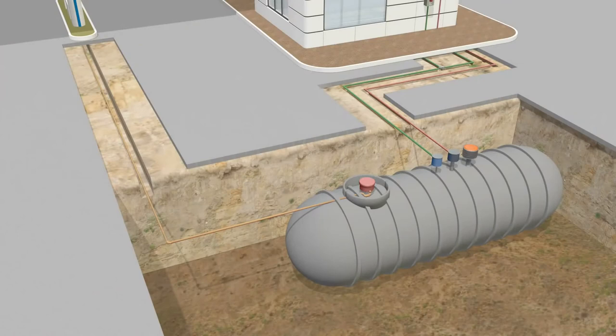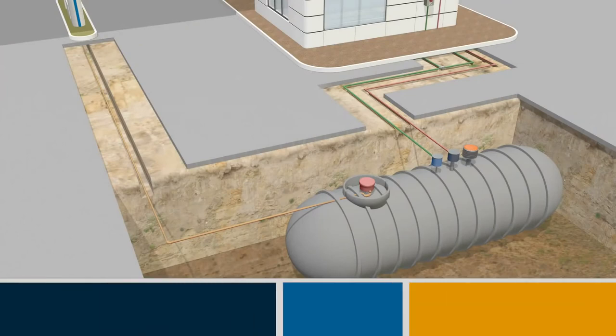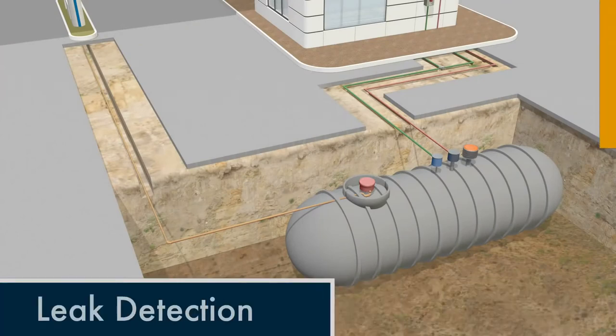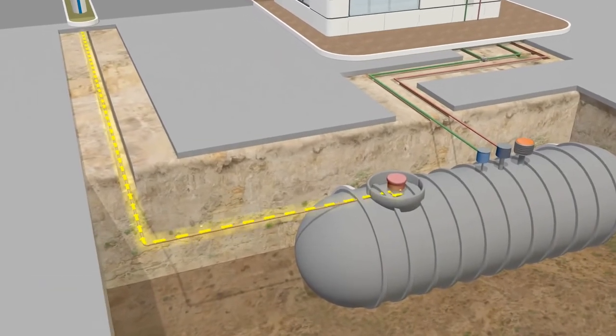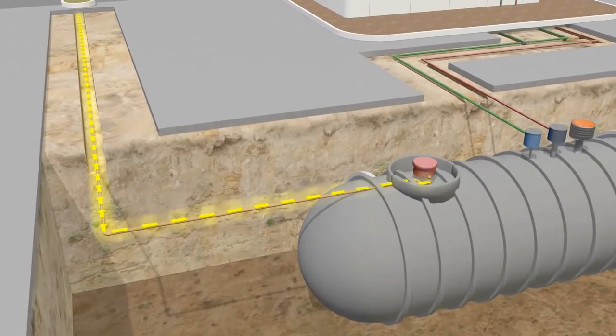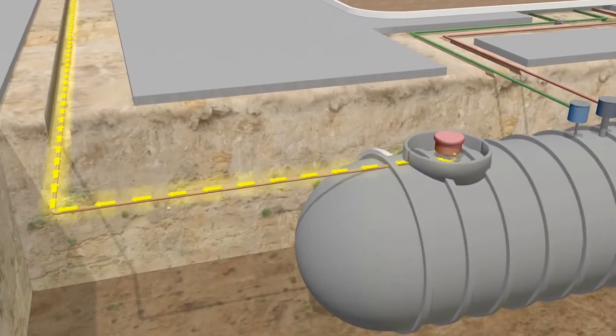But a commitment to safety also means expecting the unexpected. So leak detection is another important feature of underground storage tanks. Sensors can detect even a small leak by comparing the amount of fuel dispensed at the pump with the amount that should remain in the tank.